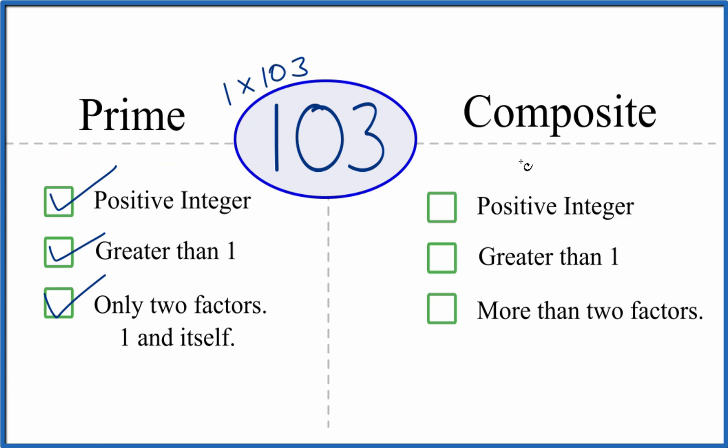But is it a composite number? It's a positive integer. It's greater than 1. Are there more than two factors? We said no, there's only two factors.